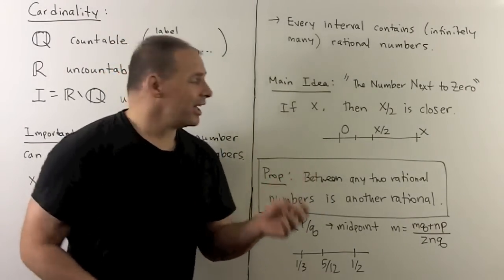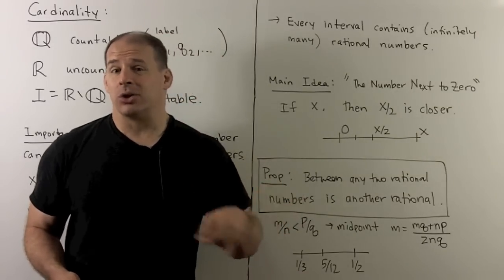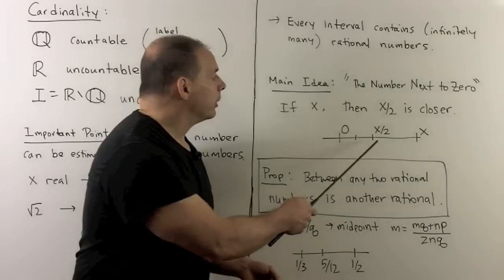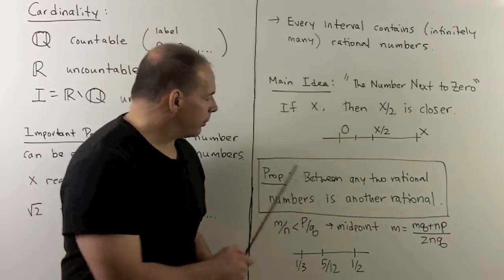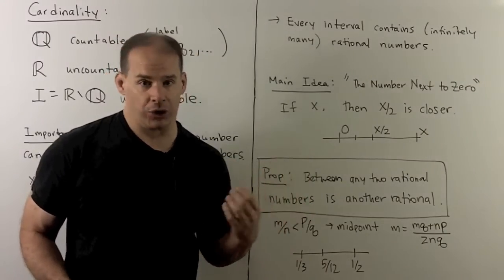Now, if you want to change your guess, then I'll just go to x over 4, and so on and so on. So, there's no number next to zero. Okay, let's go with that idea. So, the first step is, okay, proposition, between any two rational numbers is another rational number.